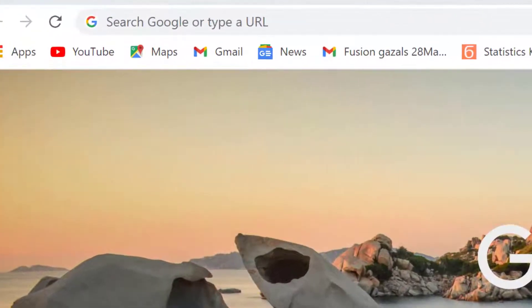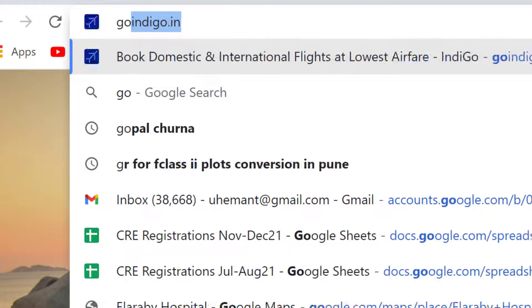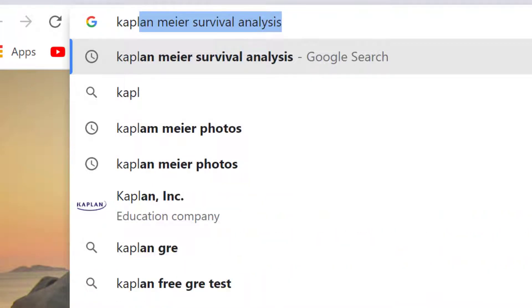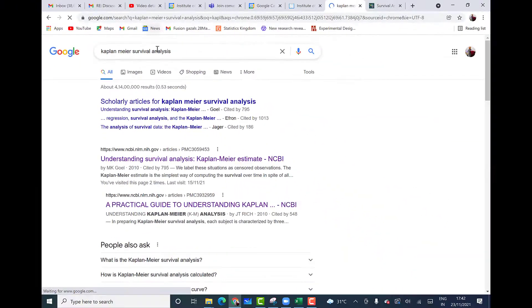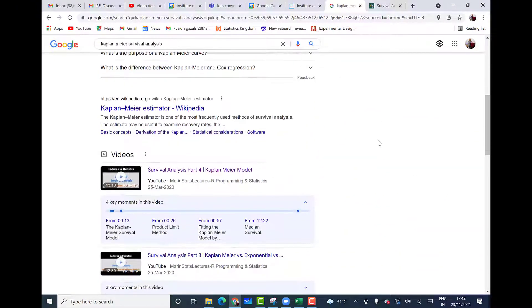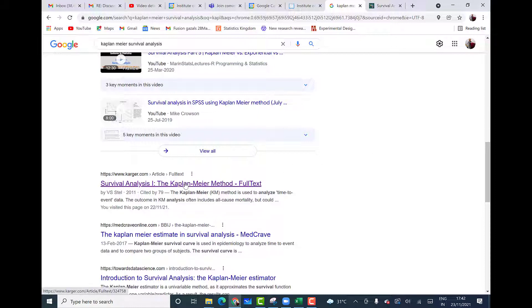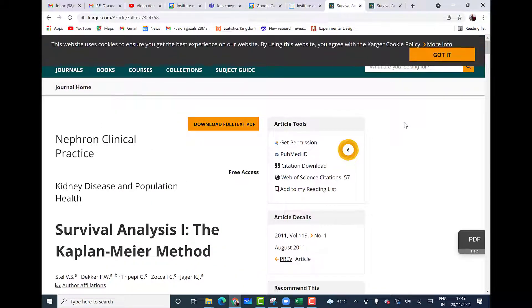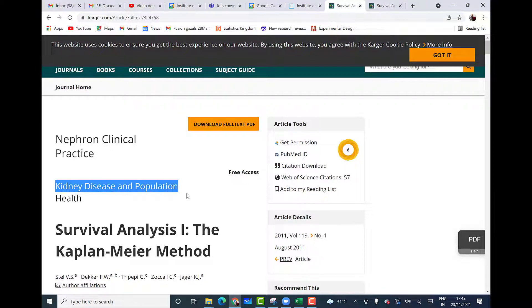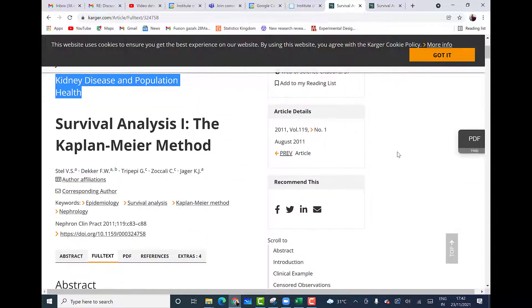The Kaplan-Meier is often used to estimate probability of survival in case of certain types of diseases such as cancer or kidney failure or many other diseases. Let us do a Google search for that. So I am doing a Google search on Kaplan-Meier survival analysis. And I just go to one of the websites. There are many websites but I go to this one.